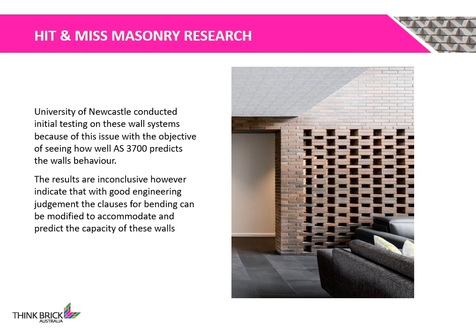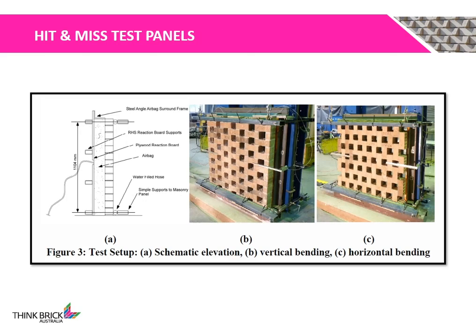The University of Newcastle conducted testing on Hidden Mist Wall systems to determine how well AS3700 predicts wall behaviour. The results were inconclusive; however, they do indicate good engineering judgement because the clauses for bending can be modified to accommodate and predict the capacity of Hidden Mist Walls. The test setup shows Figure A as the schematic elevation: a steel angle frame surrounds the wall while an airbag is placed in front of the brick wall, and a plywood reaction board is placed in front of the airbag to determine displacement under load. Figures B and C represent vertical bending and horizontal bending respectively.